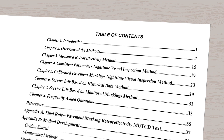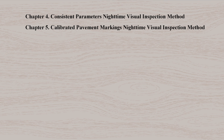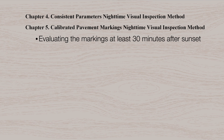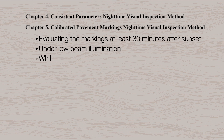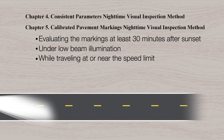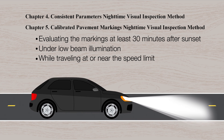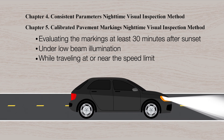There are two visual nighttime inspection methods: consistent parameters and calibrated pavement markings. These methods have several common features, including evaluating the markings at least 30 minutes after sunset under low beam illumination while traveling at or near the speed limit. For both visual methods, the inspector's ratings are used to determine which markings need to be scheduled for replacement.